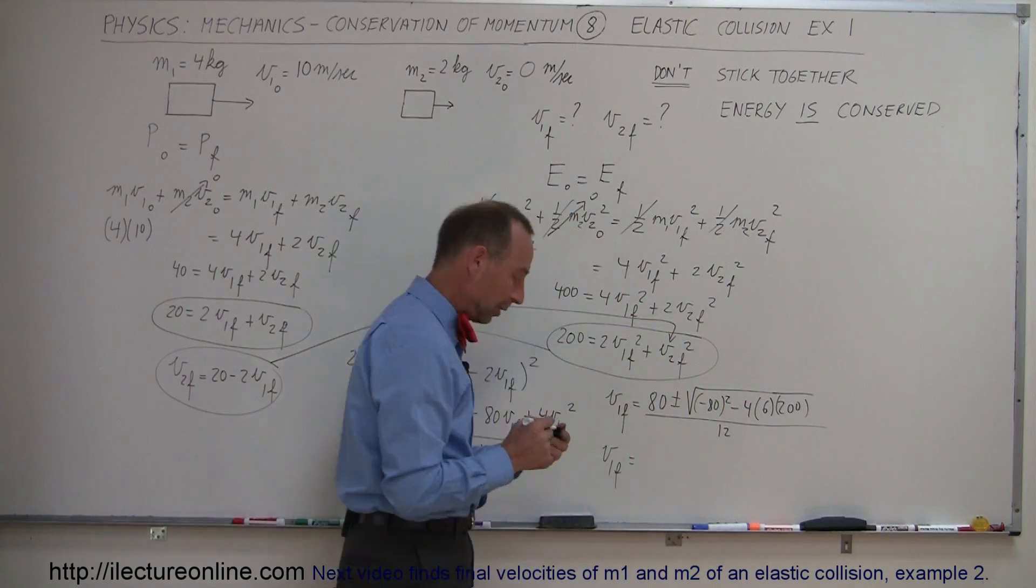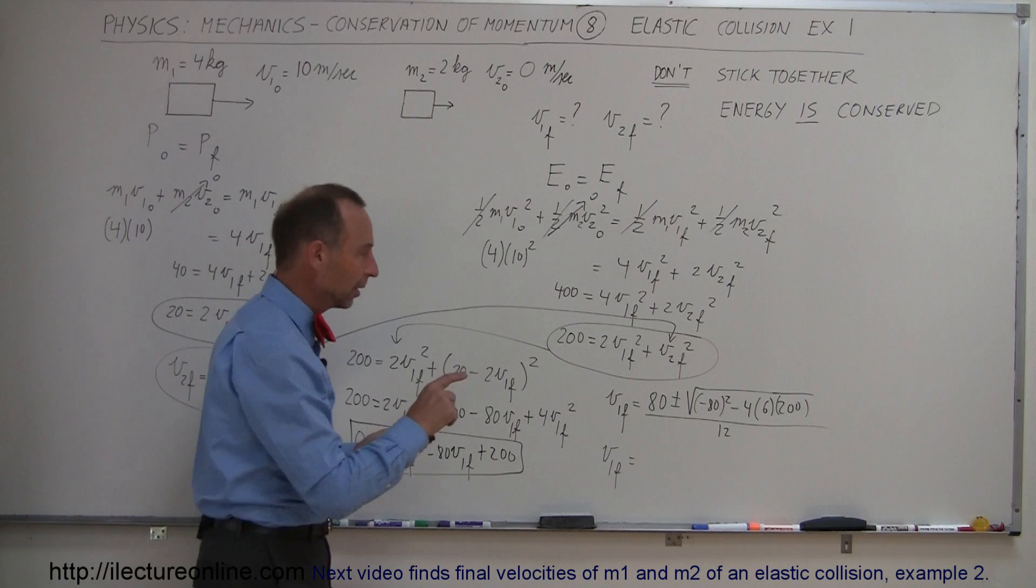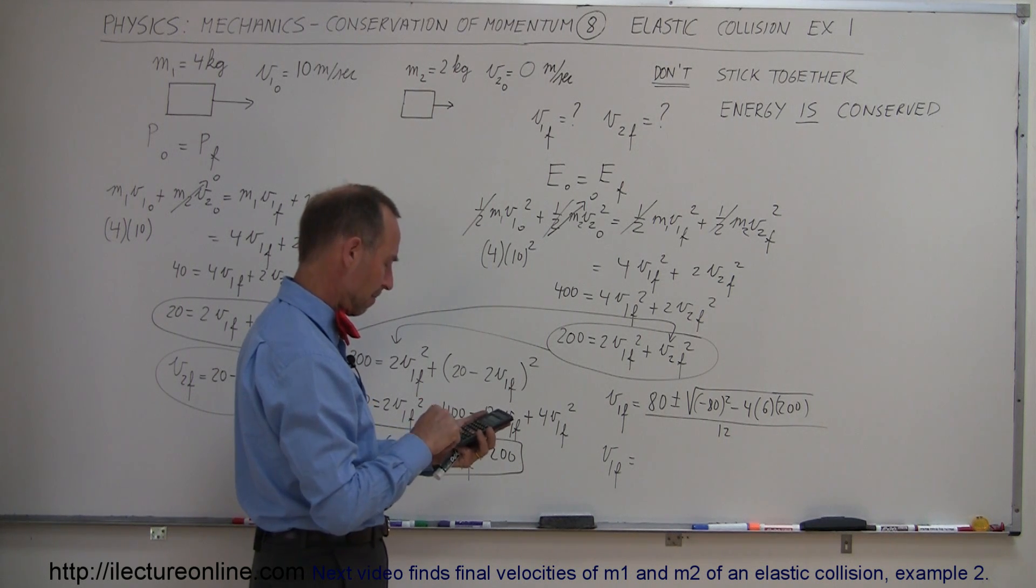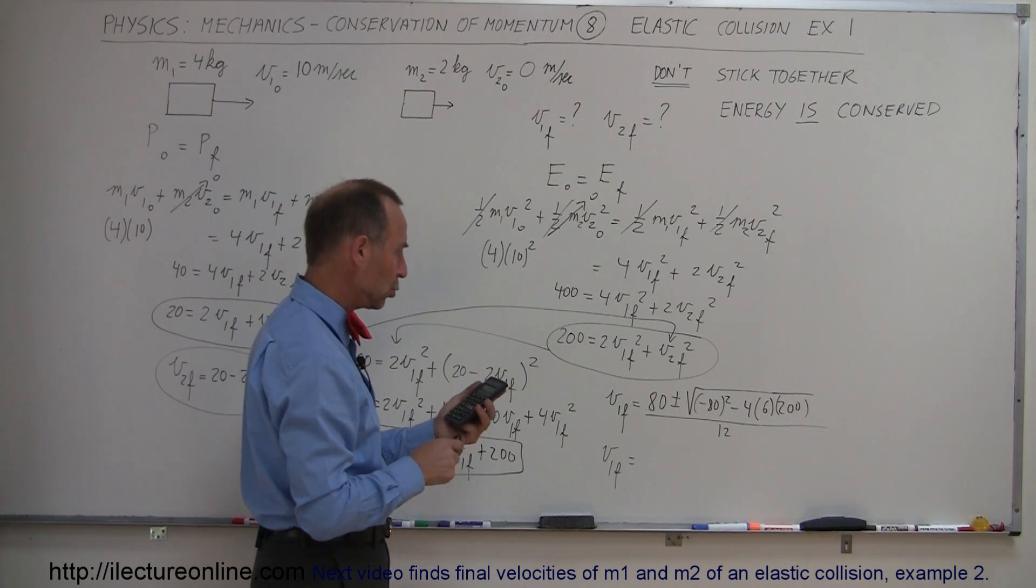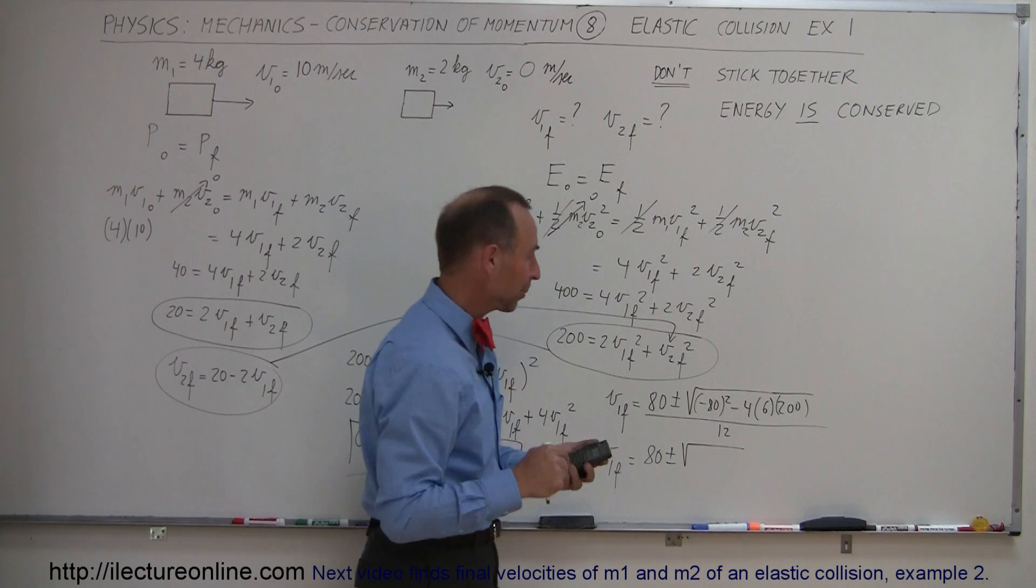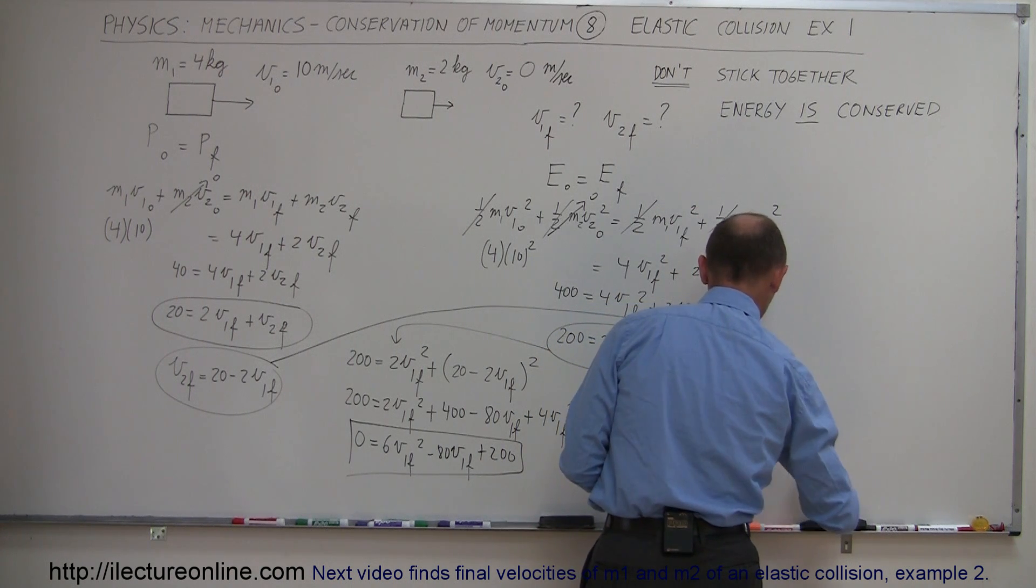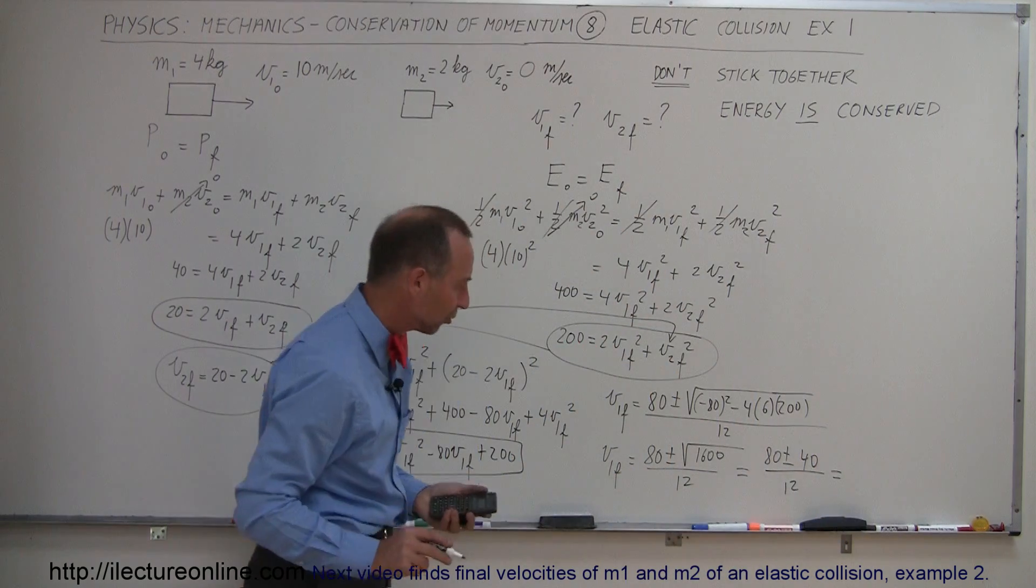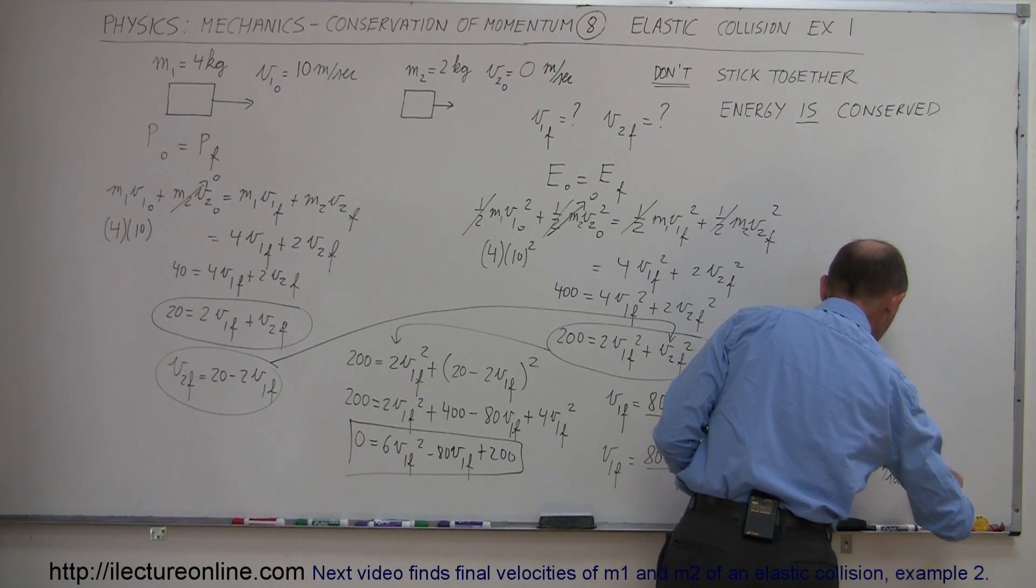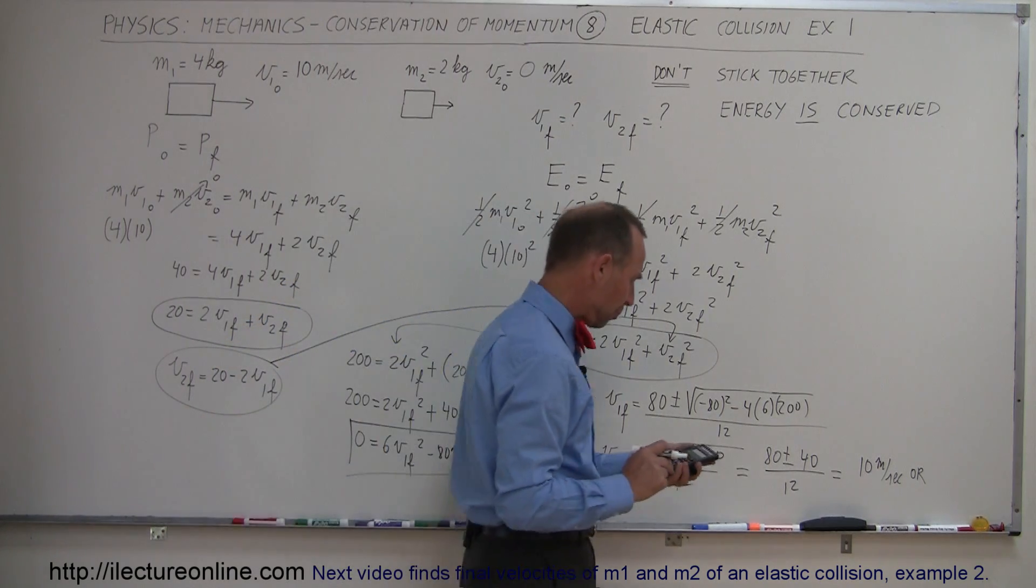So V1 final equals, that will leave me probably with two answers, because there's the plus or minus in here. And one of them will seem plausible, the other one probably not. So let's find out. 4 times 6 times 200, that's 4,800. So this is equal to 80 plus or minus 40 divided by 12, which will leave us two possible answers. So if I add the two together, 80 plus 40 is 120 divided by 12, gives me 10. So it would be 10 meters per second. Or the second possibility is 80 minus 40, which is 40 divided by 12, which gives me 3.33 meters per second.